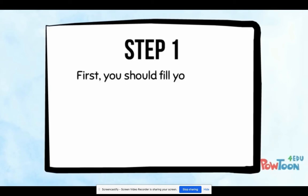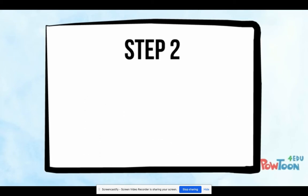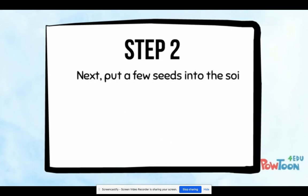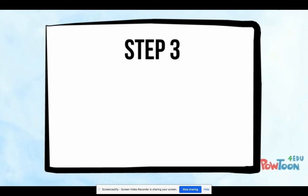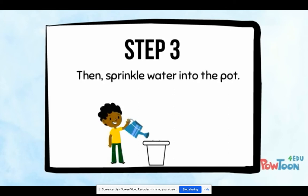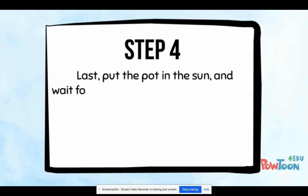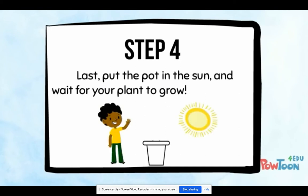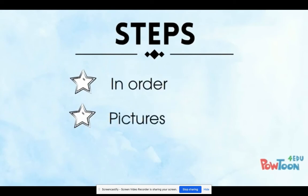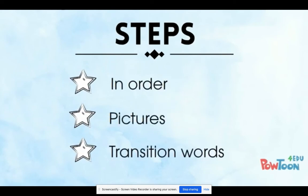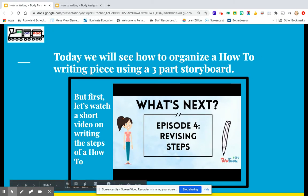Step one: first you should fill your flower pot with soil. Step two: next put a few seeds into the soil. Step three: then sprinkle water into the pot. Step four: last put the pot in the sun and wait for your plant to grow. I told the steps in order, added pictures, and used transition words. Watch episode four to see how I revise my steps to make them even better.